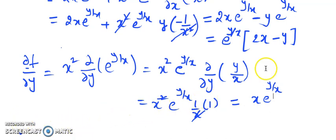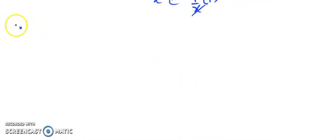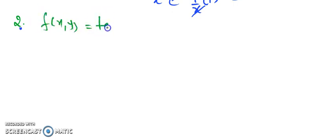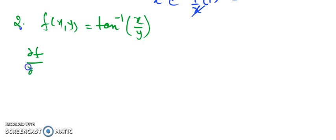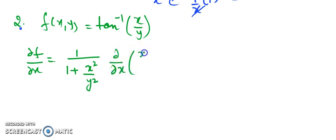Now let's see some more examples. Example number 2: f(x,y) = tan⁻¹(x/y). First let us find del f / del x. Here there is one function which is tan⁻¹, then we see the x and y variables. We recall the derivative of tan⁻¹ of something: it is 1 upon 1 plus the square of that expression. So here it becomes 1/(1 + x²/y²), into the partial differentiation with respect to x of x/y.